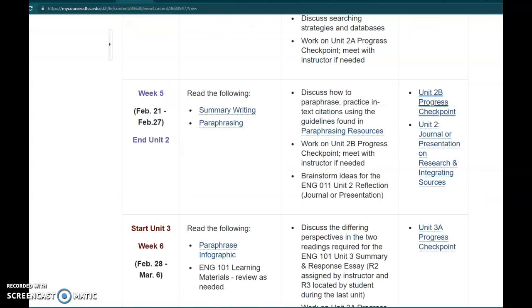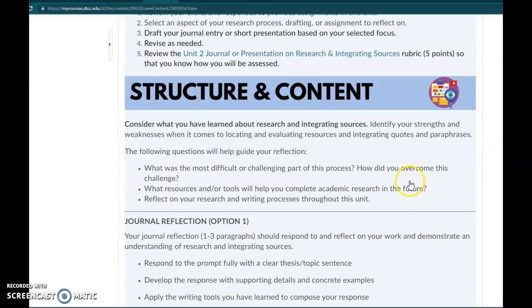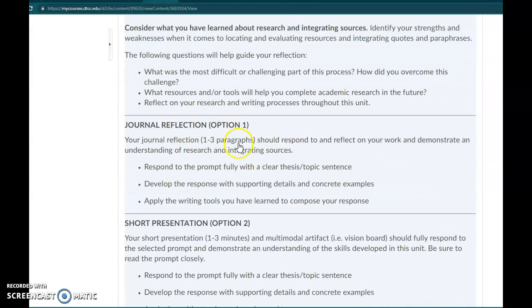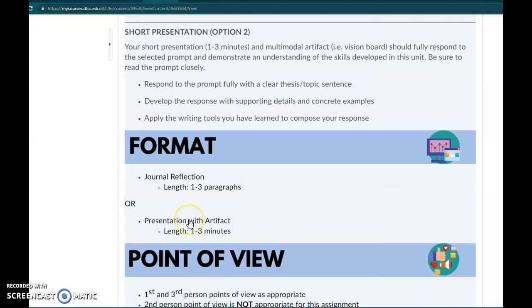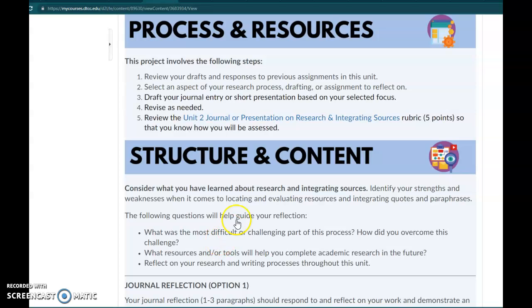As for the other thing that you have coming, the Unit 2 Journal or Presentation on Research and Integrating Sources, this is exactly the same as the other journal that you just finished writing. You can either write a journal, which most of you chose, or you can do a quick presentation. The only difference is that this time you're going to be focusing on what you've learned about research and about integrating sources. What was the most difficult and challenging part of the process? What resources and tools will help you complete academic research?